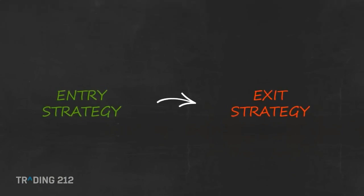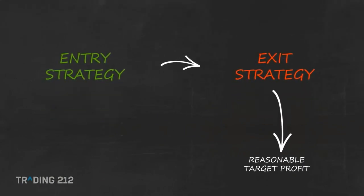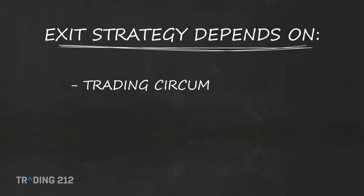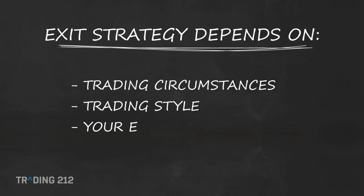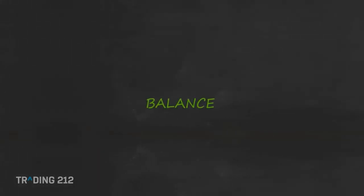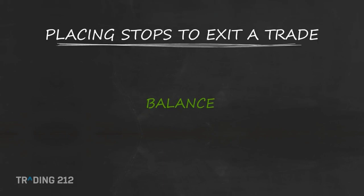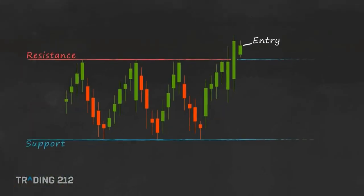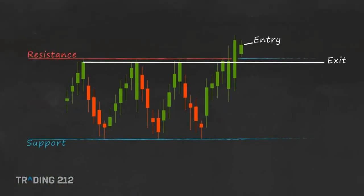Once you have determined your entry, you'll need your exit strategy in place. A good way to determine a reasonable target profit is to analyse the previous price movements of the financial instrument. Your exit strategy will largely depend on the specific trading circumstances, trading style, your expectations, and the risk-to-reward ratio you're using. The balance to consider when placing your stops is to set them not too far — so you don't lose too much if the market turns against you — and not too close, so that small price fluctuations don't take you out of the trade too early.